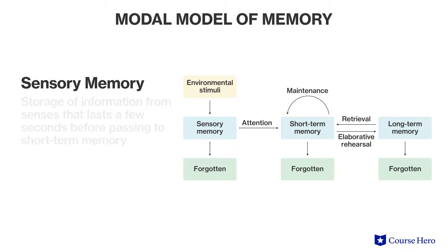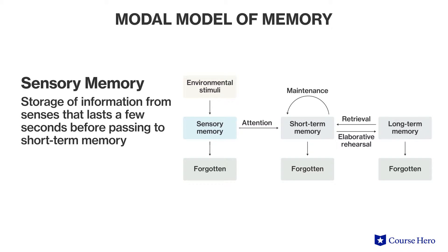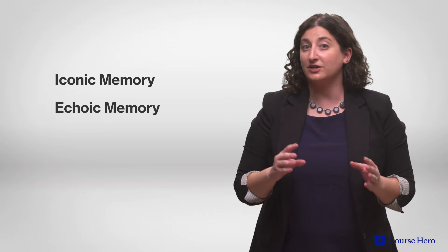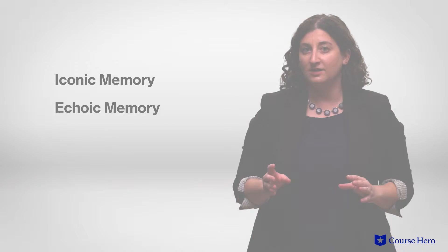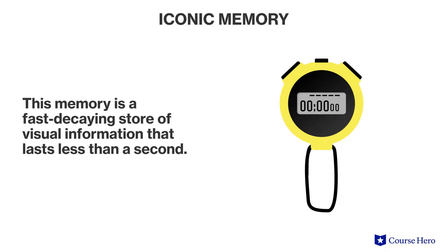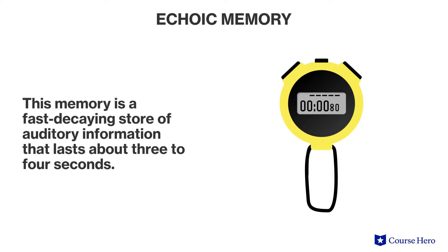Sensory memory is the storage of information from the senses that lasts a few seconds or less before passing into short-term memory. There are two main types of sensory memory: iconic memory and echoic memory. Iconic memory is a fast decaying store of visual information that lasts less than a second. Echoic memory is a fast decaying store of auditory information that lasts about three to four seconds.